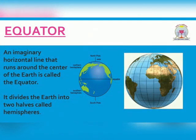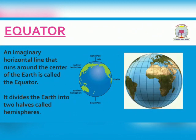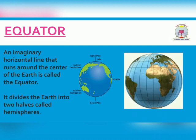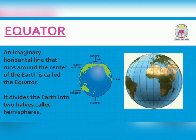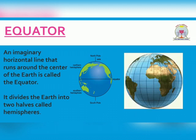Our next point of discussion is the Equator. What is an Equator? An imaginary horizontal line that runs around the center of the Earth is called the Equator. It divides the Earth into two halves called Hemispheres. The northern half is called the northern hemisphere and the southern half is called the southern hemisphere. This line is exactly halfway between the North Pole and the South Pole.